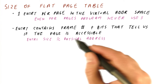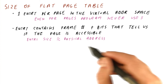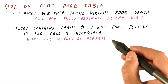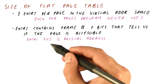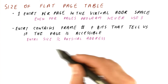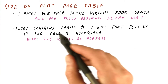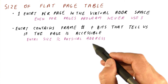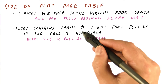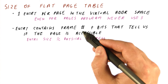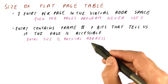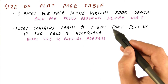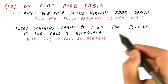The entry in the page table is typically similar in size to the actual physical address. The entry needs to contain the frame number, which is most of the bits in the physical address. It doesn't need to contain the page offset that the physical address has, but it needs to contain some extra bits.